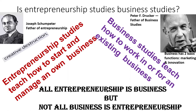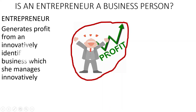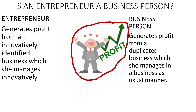Now let's look at the entrepreneur and the business person. An entrepreneur generates profit from an innovatively identified business which he or she manages innovatively. A business person generates profit from a duplicated business which he or she manages in a business-as-usual manner.